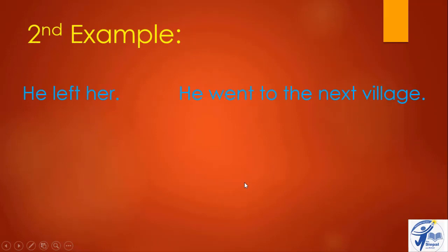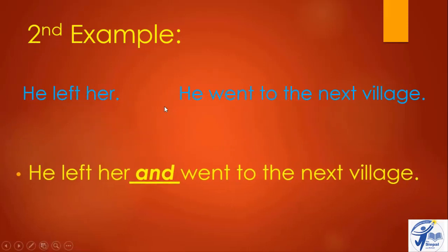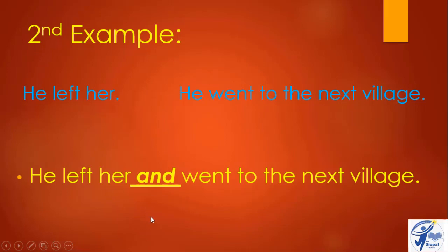Here also we have two sentences: 'He left her.' and 'He went to the next village.' Now we put 'and' between them, and we do not repeat the subject — we write directly: 'He left her and went to the next village.'